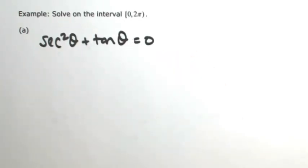Since the right side is already 0, we should probably try to factor out that left side, but I have a mix of trigonometric functions. I got the secant and I got the tangent. So what I need to do is rewrite one of these so that it's in terms of the other.